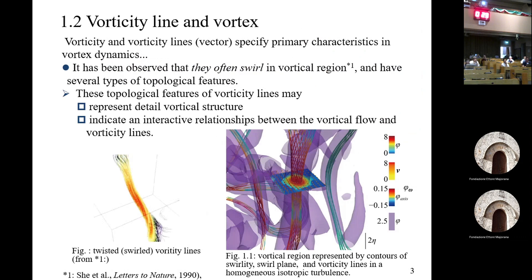In the study of vortex dynamics, the vortex tube or vortex line specifies primary characteristics. It has been observed for a long time that the vorticity line sometimes swirls in the vortical region, and it has several types of topological features — swirling, or going straight. These topological features of the vorticity line may represent vortical structure or indicate interactive relationships between vertical flow and vorticity lines.